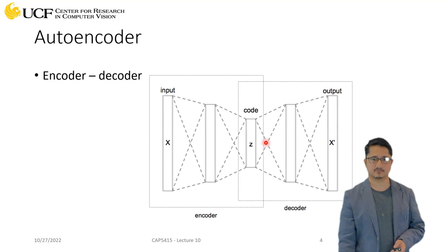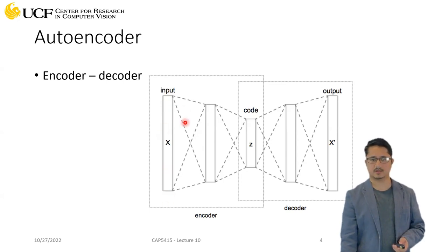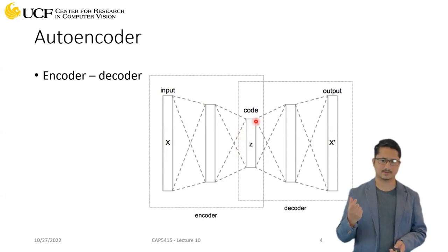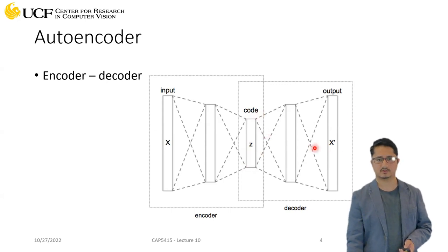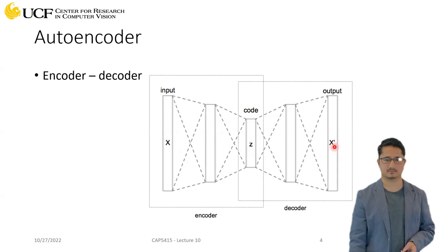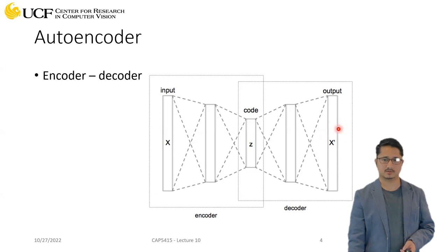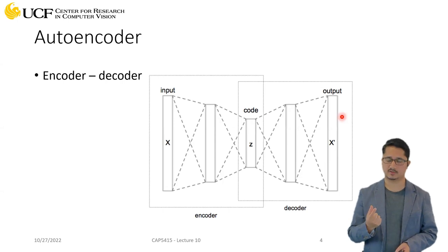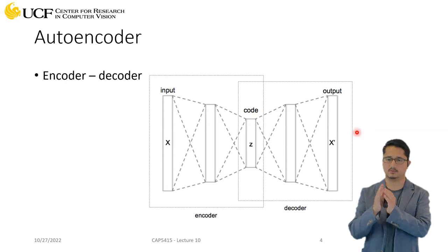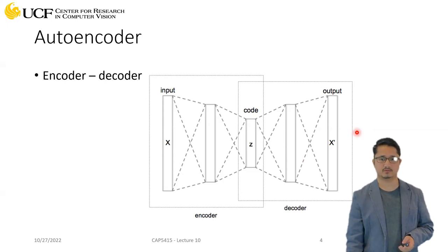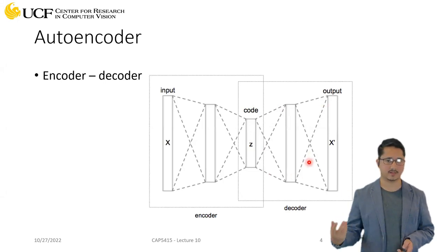The basic structure looks like this: you have your input data — a feature vector, images, or video — and you have your encoder, which takes that as input and tries to compress it to a very small dimensionality space. That compressed representation is called the code. You then use that code to reconstruct the same input, shown as x-prime. When you do that reconstruction, you can estimate how good it was by comparing the input with the output to compute your loss — that's your training loss. This part is called the encoder and this part is called the decoder.